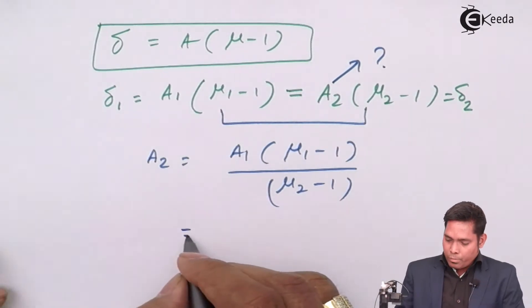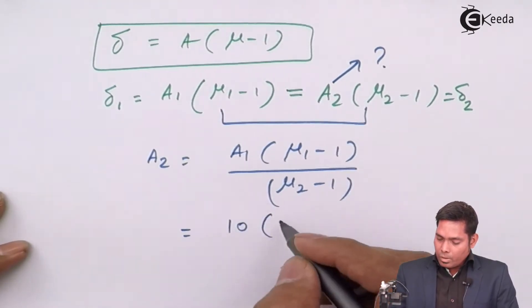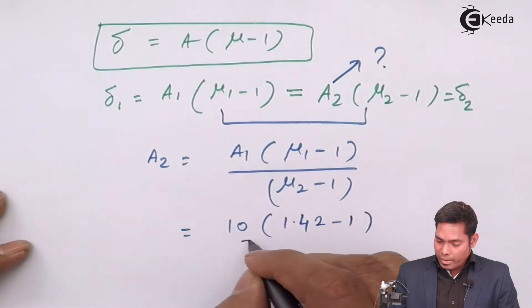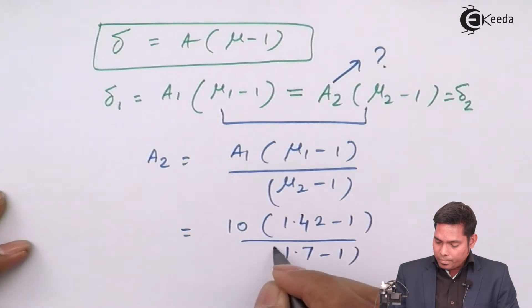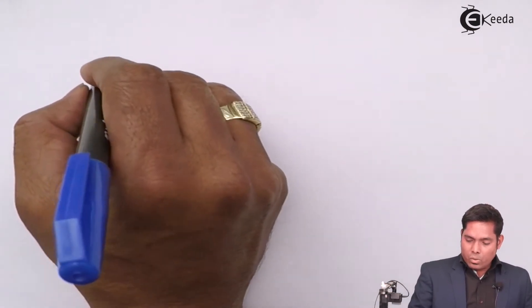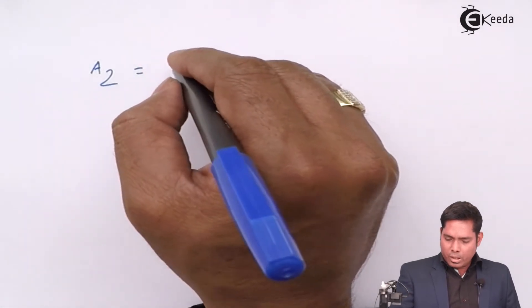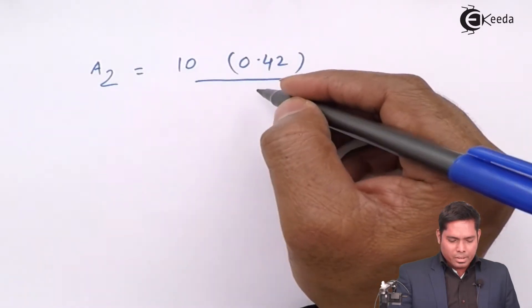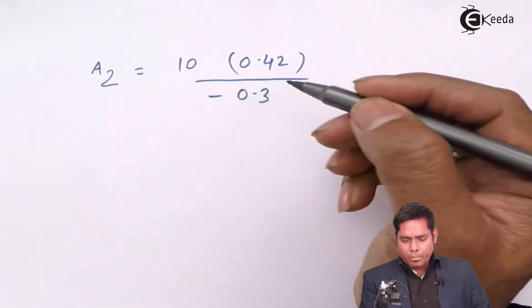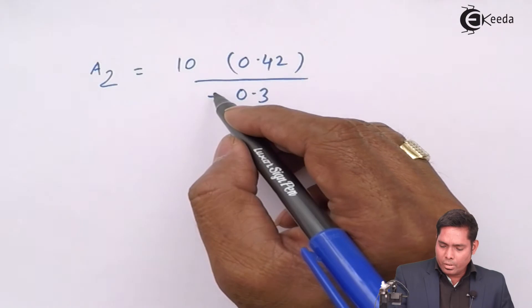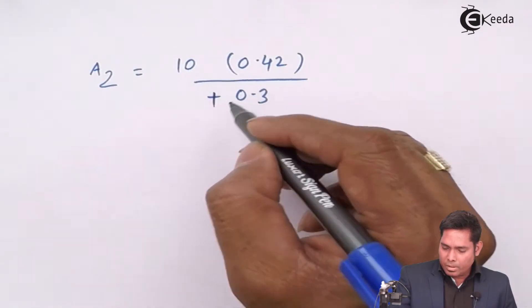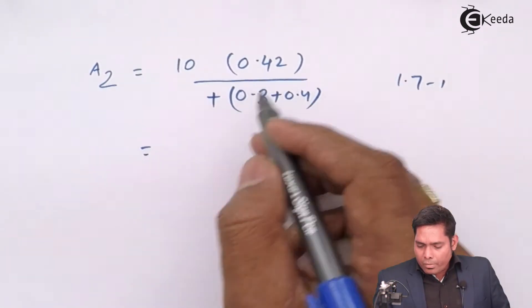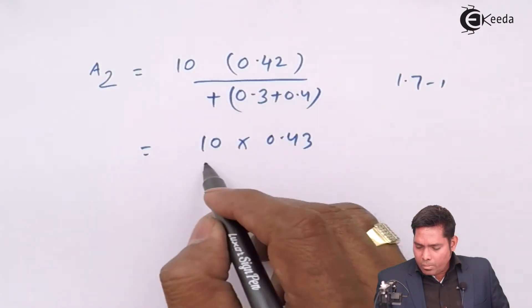I will just plug in the values. a1 is 10. mu 1 is 1.42 minus 1 divided by 1.7 minus 1. So a2 comes out to be 10 into (1.42 minus 1 is 0.42) divided by 0.7.